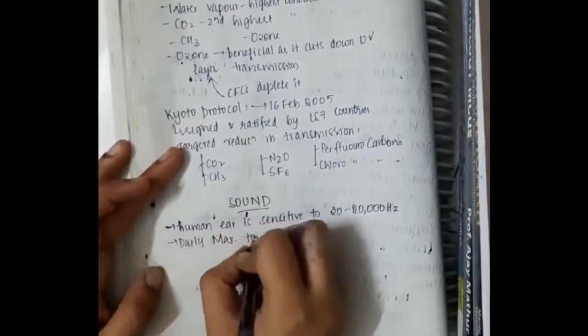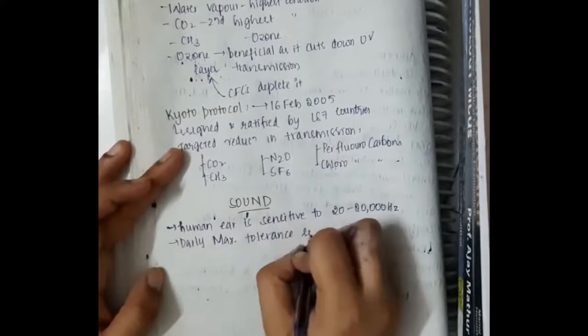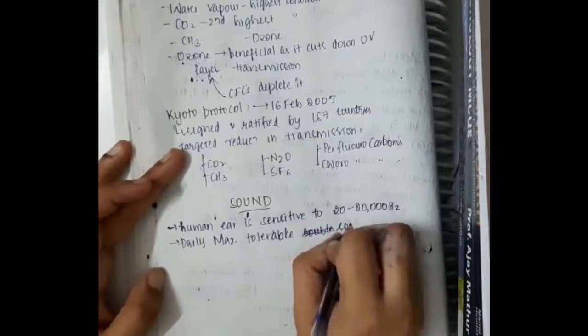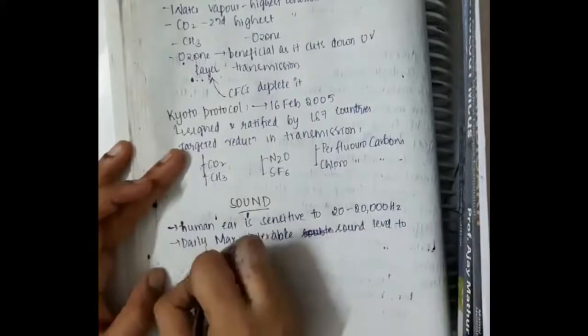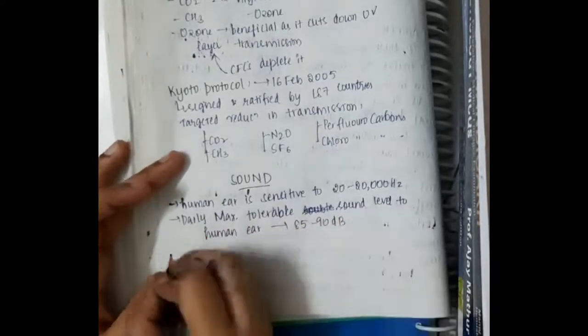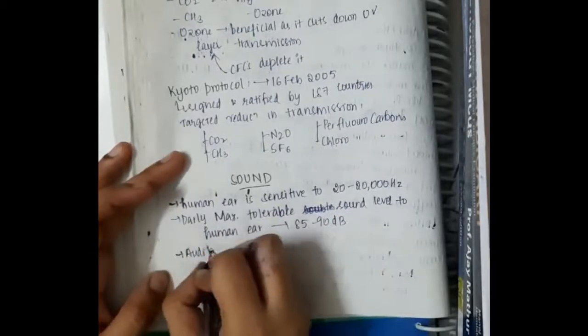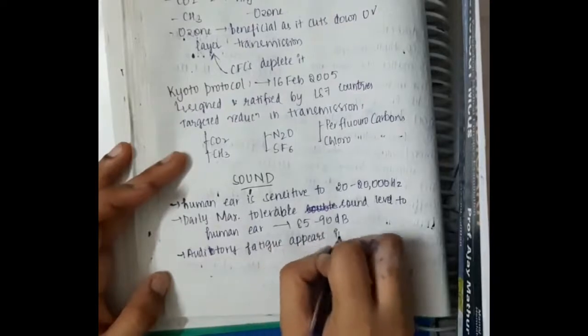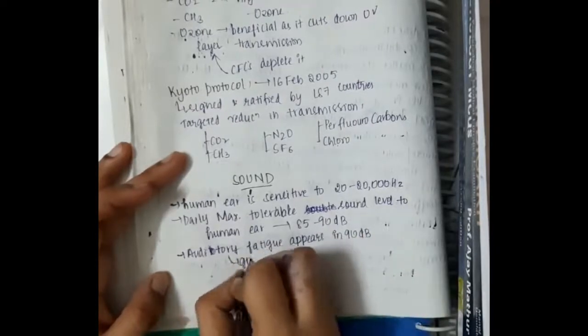Daily maximum tolerable sound level to human ear is 85 to 90 dB. Auditory fatigue appears in 90 dB, which is important. Maximum tolerable is 80 to 90 dB.